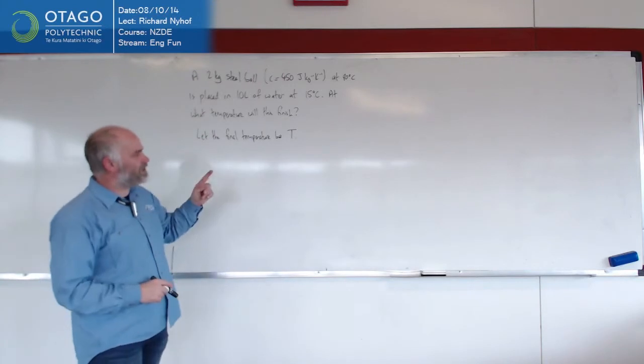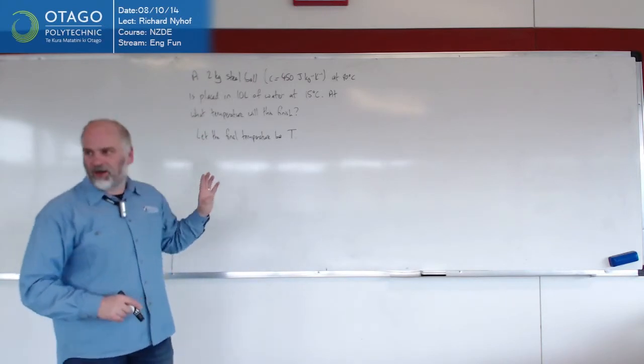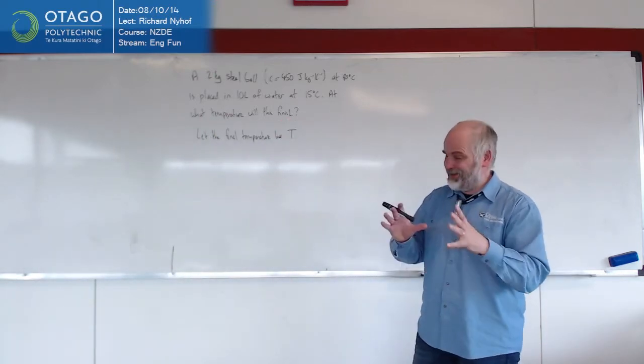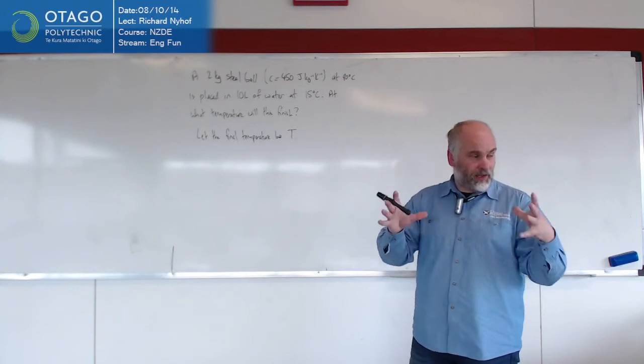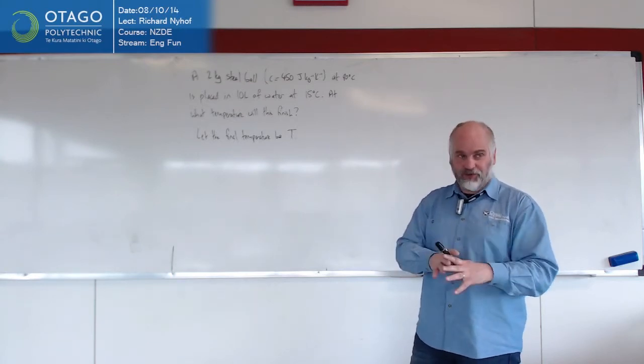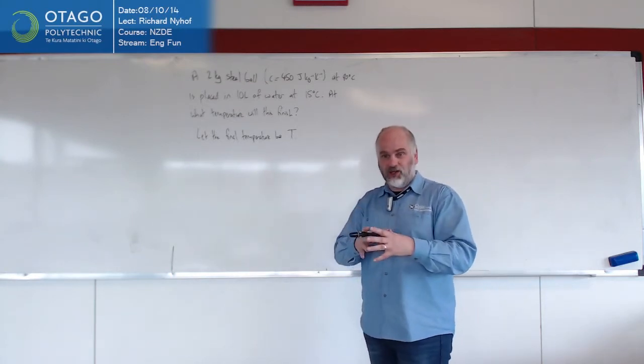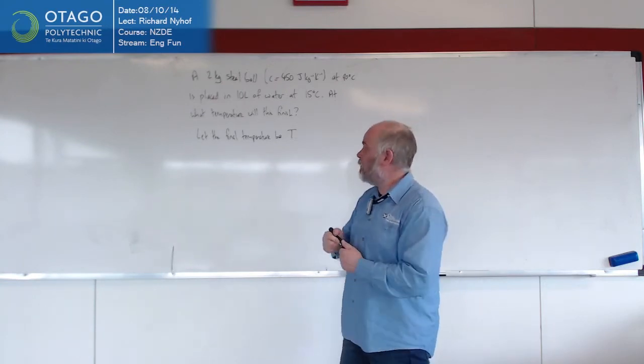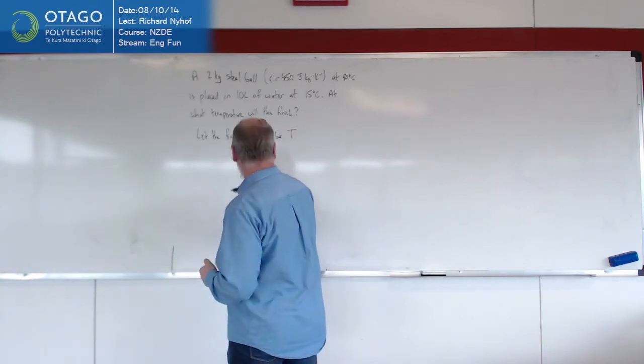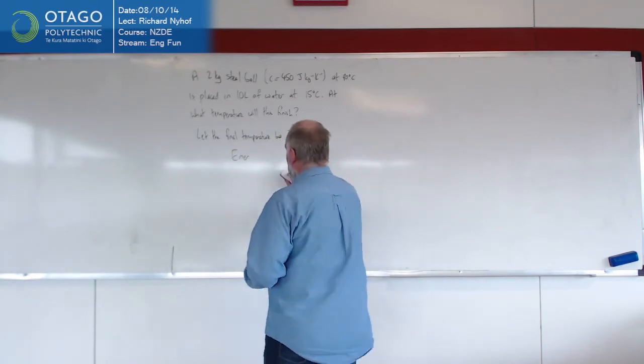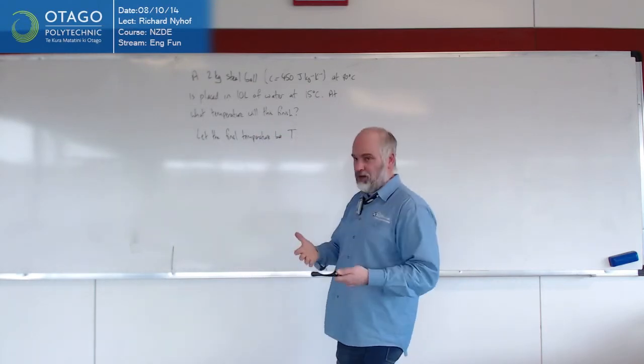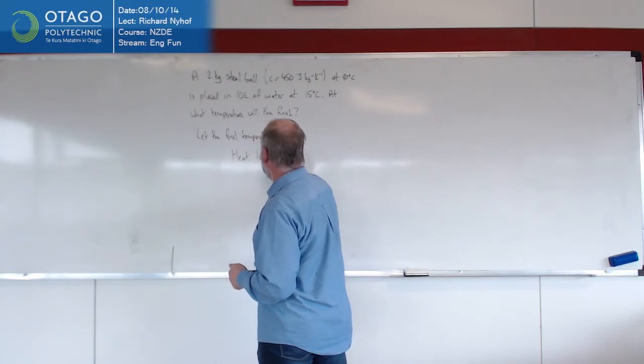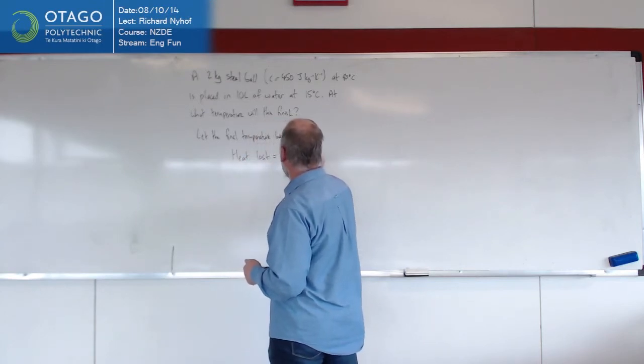Well, one's heating and one's cooling. So we've got to think about how we're going to actually get a handle on T. And the physics behind it, assuming that there's no loss due to bad insulation or anything, the physics is that whatever energy the steel ball loses, the water gains. So what we're basically saying is that energy, or heat in this case, heat energy, it's the same. Heat is a type of energy. So we'll go with heat. So heat lost equals heat gained.